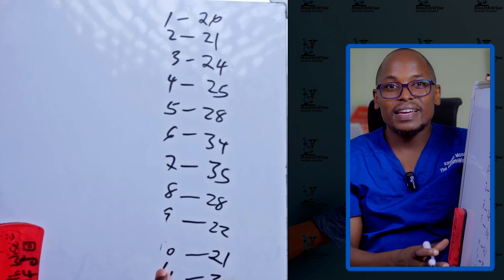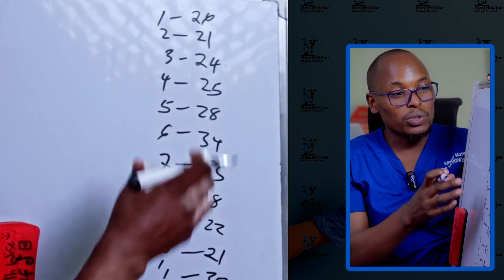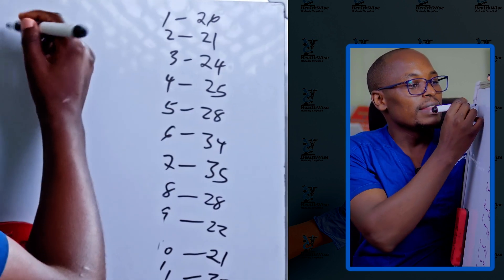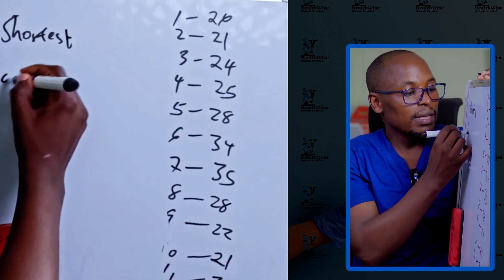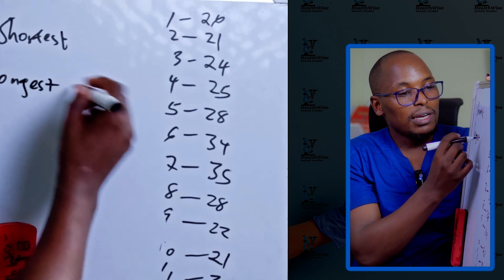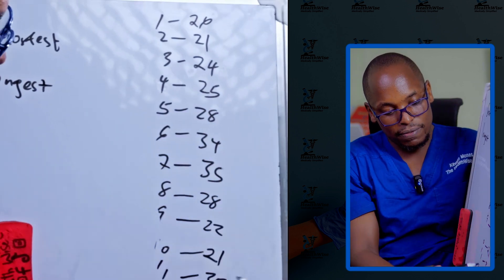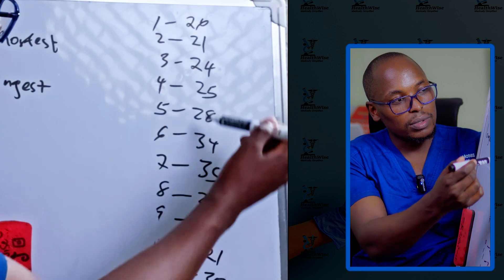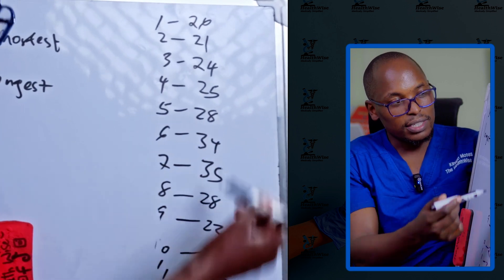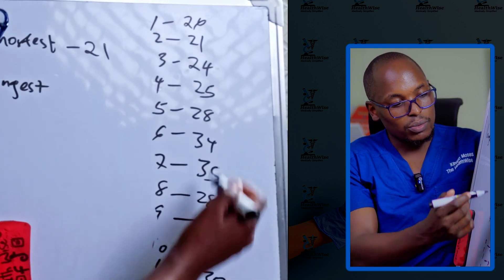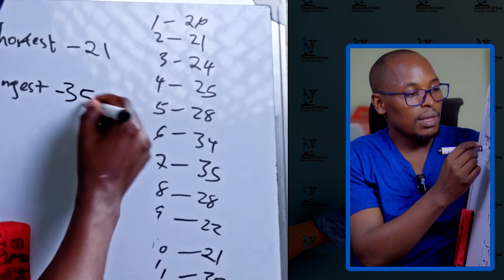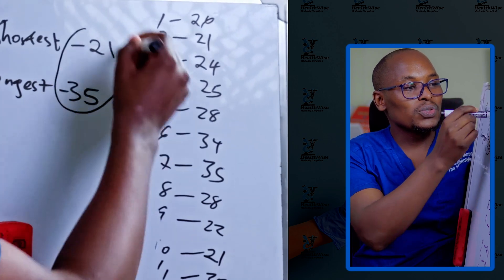Now, once you have this, it becomes very easy for you because what you need to do here is to pick the shortest cycle and then you pick the longest. Now for the shortest here, what do we have? We have 21, 22, so it's 21. So the shortest is 21 and the longest is we have 30, we have 35. So we are going to work with this to identify the safe and unsafe days.